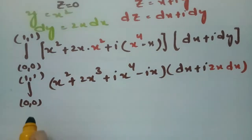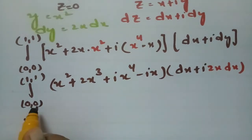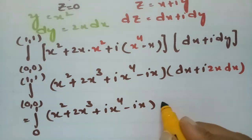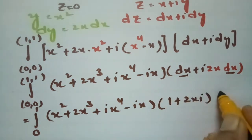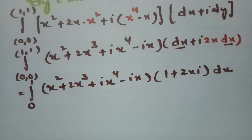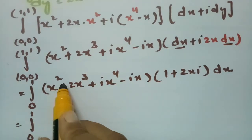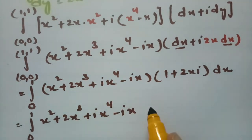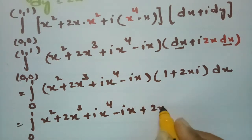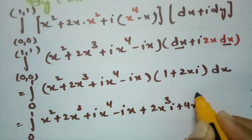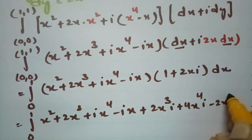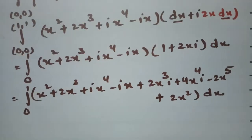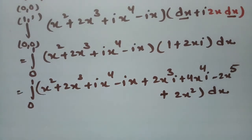All terms are now expressed in x, with x from 0 to 1. Factoring out dx from dz gives (1 + 2xi) dx. Multiplying out, we get: x² + 2x³ + i·x⁴ − ix, then multiplying by 2xi gives 2x³i + 4x⁴·i² − 2x⁵·i². Since i² = −1, the i² terms contribute real parts: −4x⁴ becomes +... and +2x² as real terms.